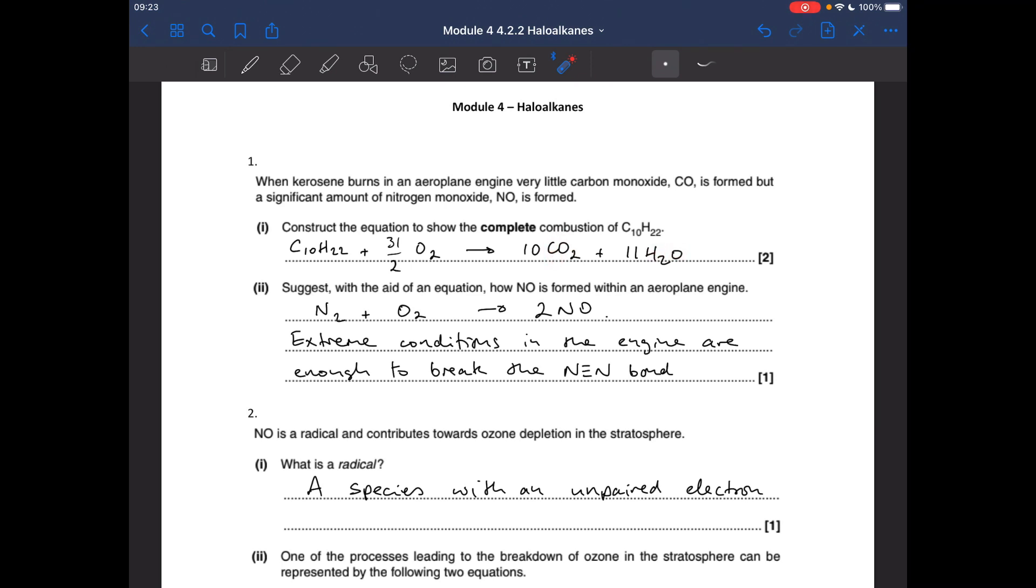So I always do it this way. The number of carbons in the fuel is the number of carbon dioxides you'll get. You'll get half as many waters as hydrogens in the fuel, and then I'll go back and do the oxygens with a top-heavy fraction. So 31 over 2 O2s gets you the 31 Os you need on that side.